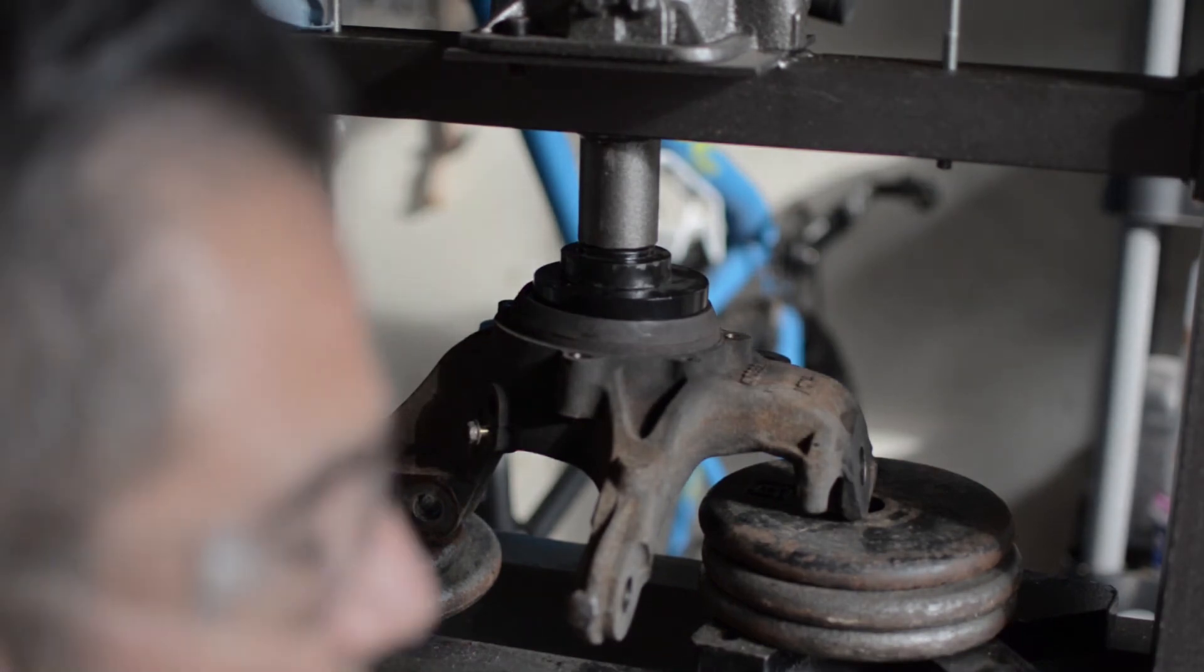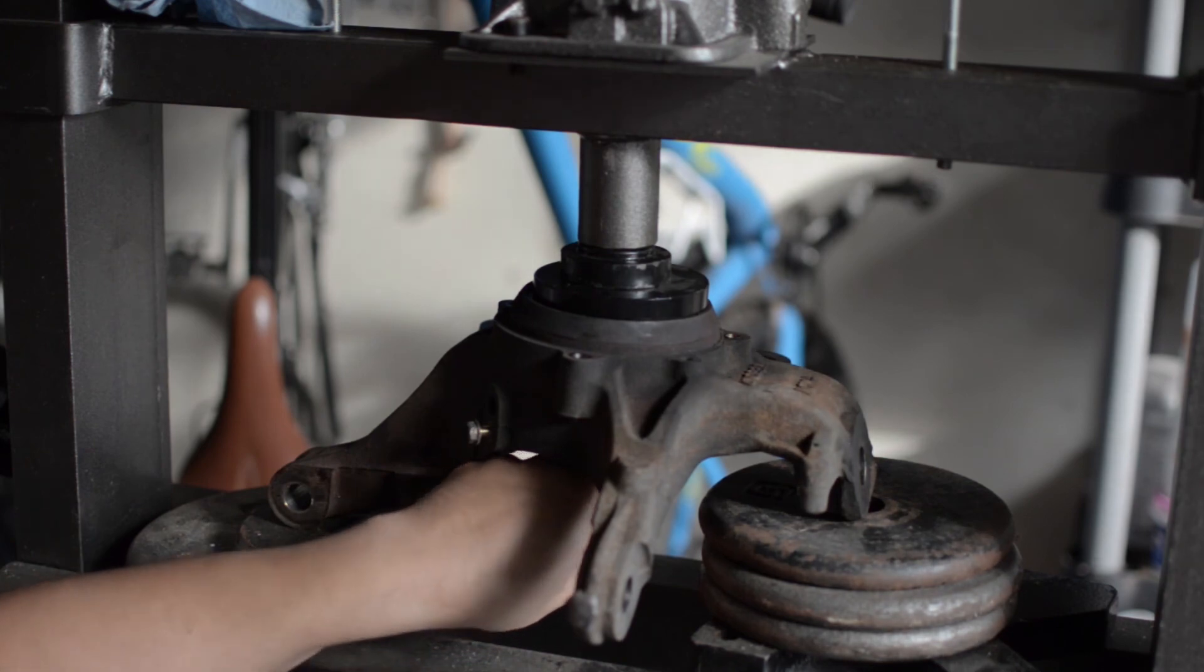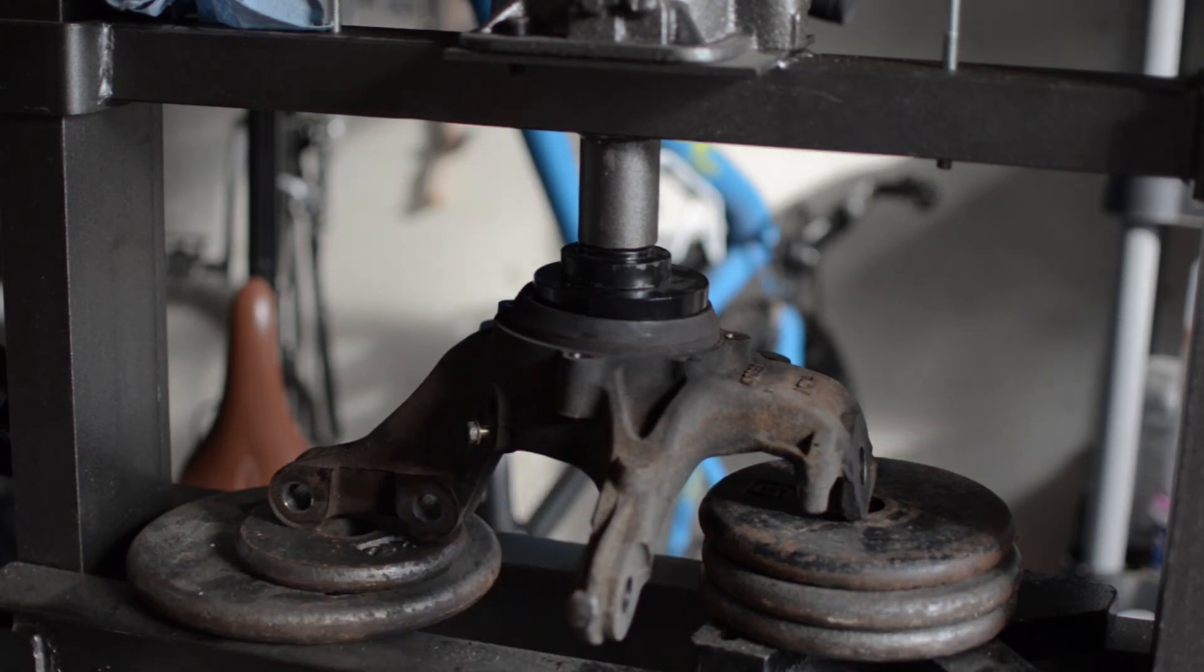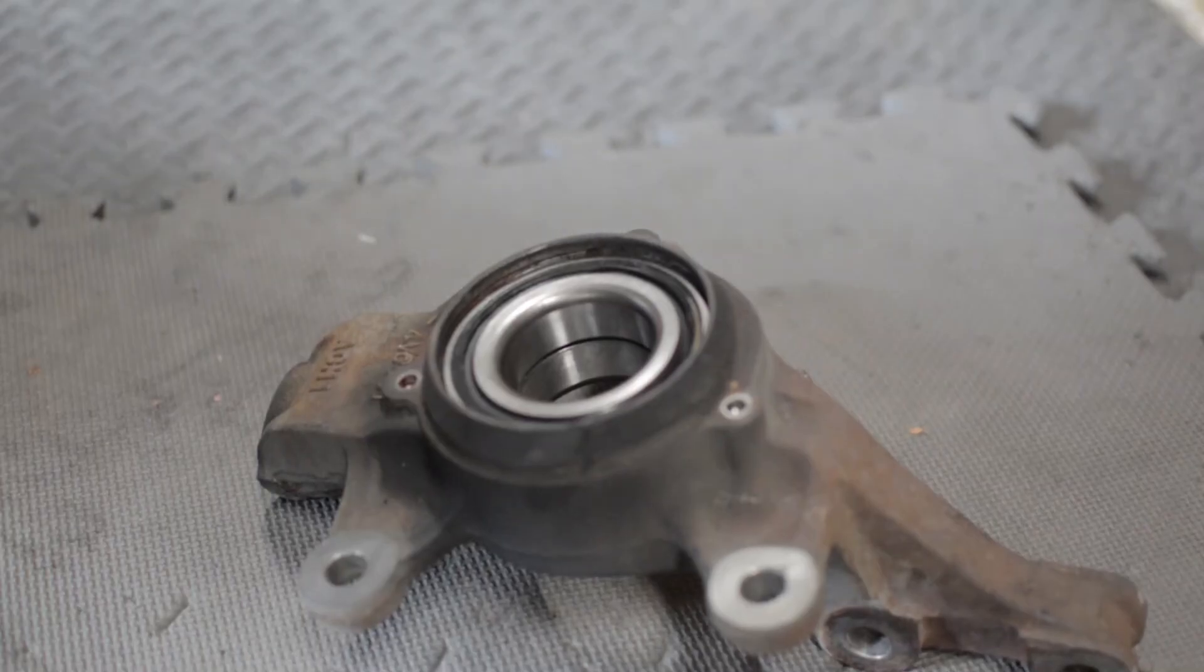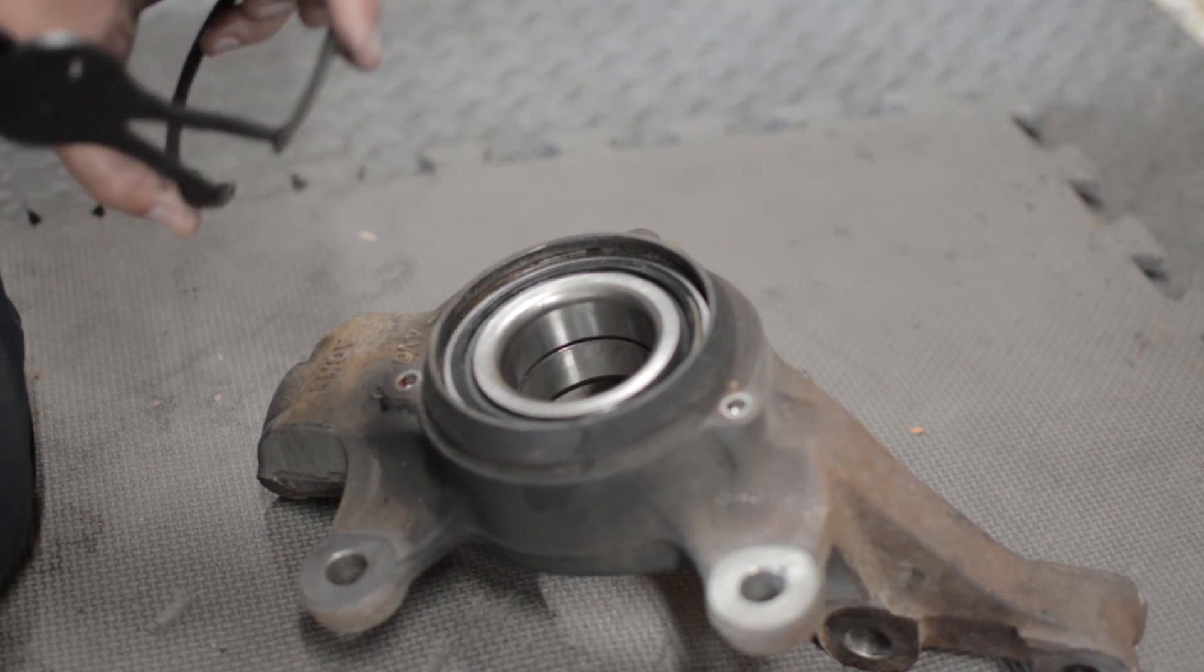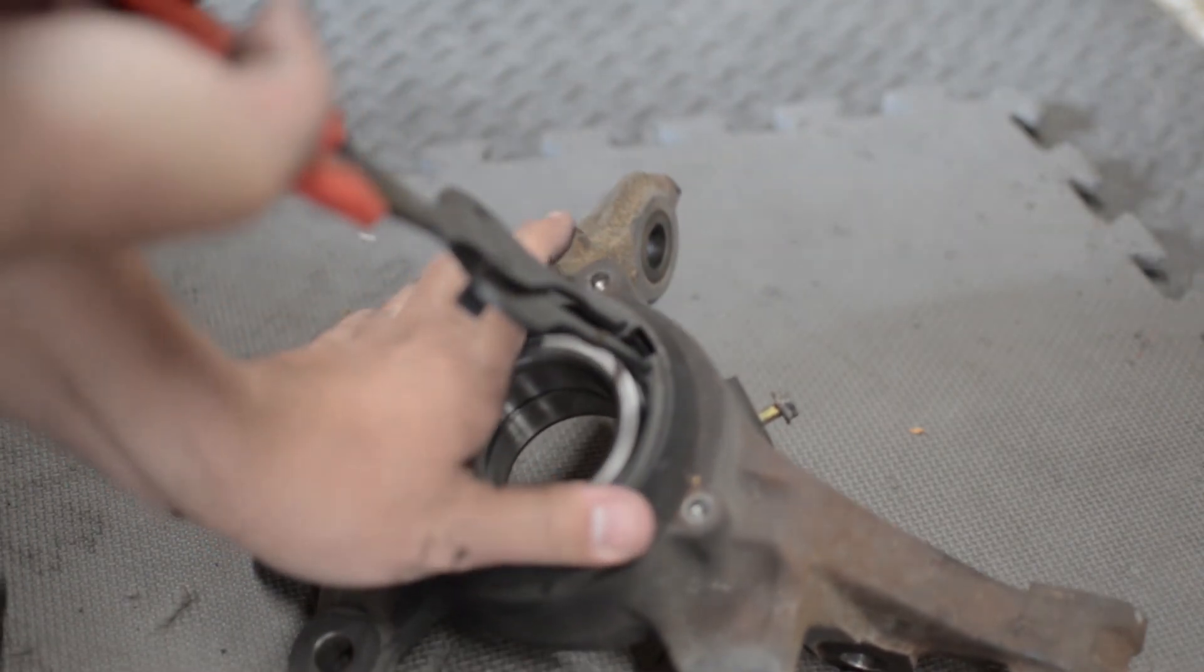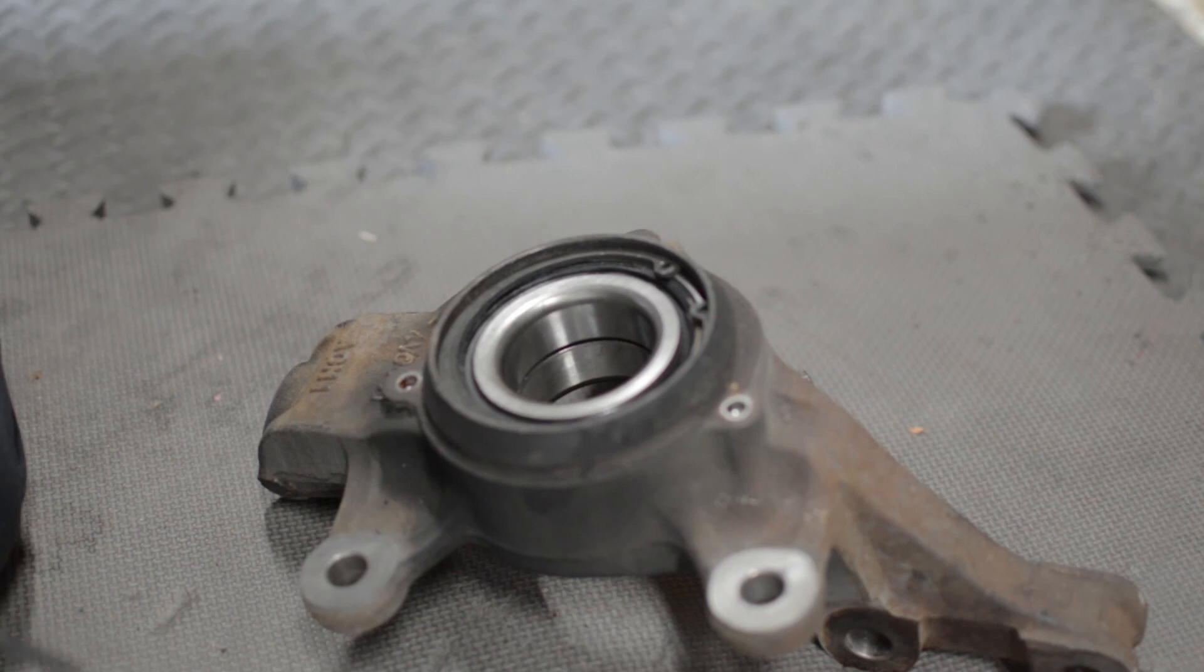When you're working on the shop press, look underneath the steering knuckle. There's still a gap between the bearing and the steering knuckle at the bottom of the lip, so we need to go forward. And we're good. We're ready to install the snap ring. And we've got it—we're good to go.